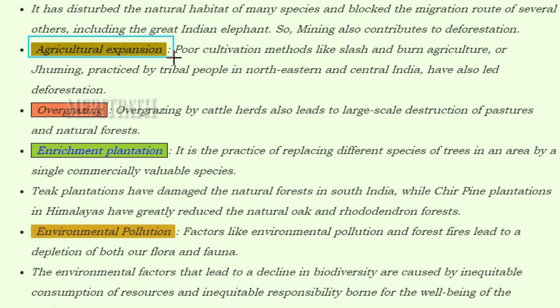Agricultural expansion and poor cultivation methods like slash-and-burn agriculture (jhuming), practiced by tribal people in northeastern and central India, have also led to deforestation. Overgrazing by cattle herds also leads to large-scale deforestation of pastures and natural forest.